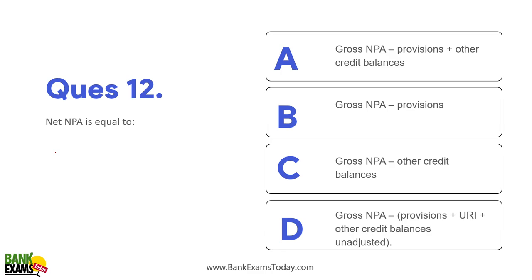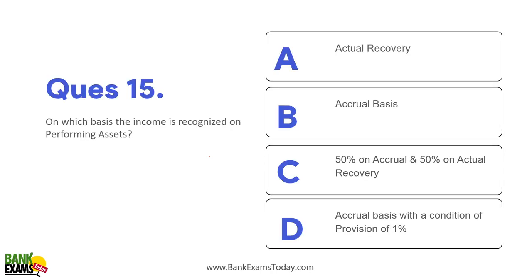Net NPA = Gross NPA minus all provisions, minus unrealized interest that has not been received, minus other credit balances adjusted. For example, over 90 days of performing status, the bank has already recognized three months of EMI as income on an accrual basis — that becomes unrealized interest once the account turns NPA.